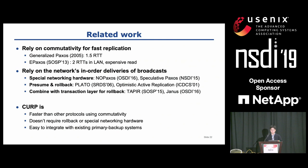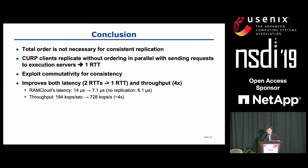Since CURP is a simple augmentation to existing primary backup replication, the changes required to apply CURP are not intrusive and are very simple to apply. From this talk, we learned that total order is not a requirement for consistent replication. CURP clients replicate without ordering at the same time as sending the request to primaries. Even with unordered replication, CURP doesn't compromise consistency by exploiting commutativity of concurrent operations. This approach resulted in better latency and throughput, which is almost as good as no replication.